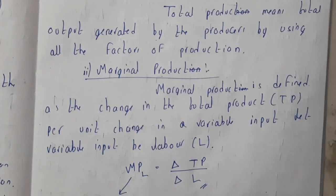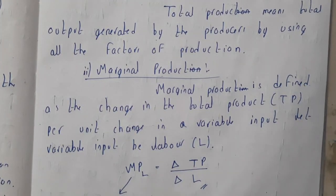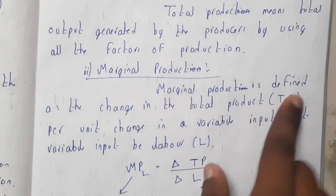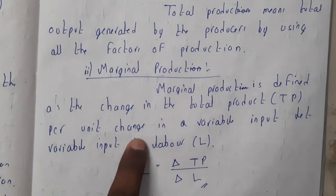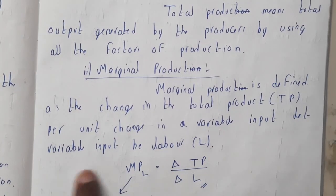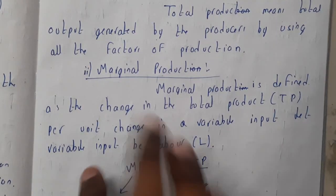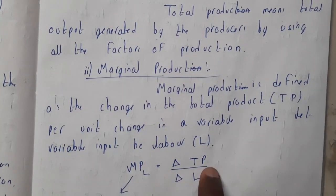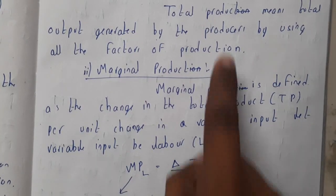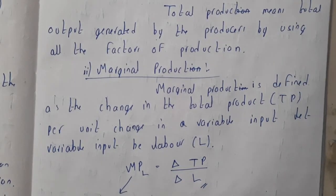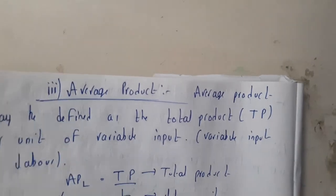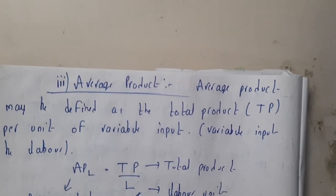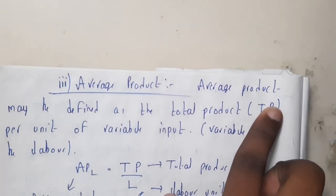Marginal product is the difference between two output values with respect to labor. More precisely, marginal product is defined as the change in total product per unit change in the variable input — that is, changes in labor. It is expressed as: MP = ΔTP / ΔL.